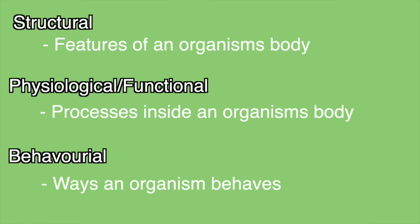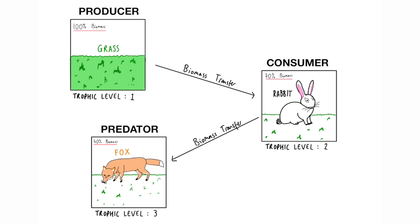Some organisms develop adaptations that help. These can be categorised into structural, physiological and behavioural. Something a lot of you have probably seen from a young age are food webs or food chains. They can be broken down into three things: producers, consumers and predators. Each stage of a food chain or a food web is called a trophic level, so the producer is always trophic level one. The difference between the different trophic levels is to do with the amount of biomass, which is at its peak at trophic level one at the producer.